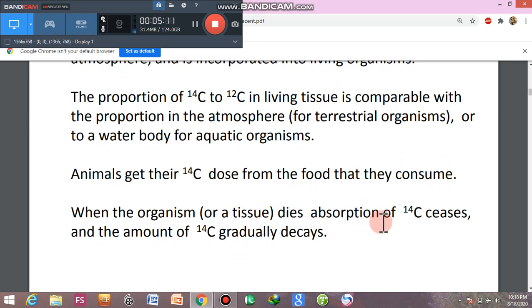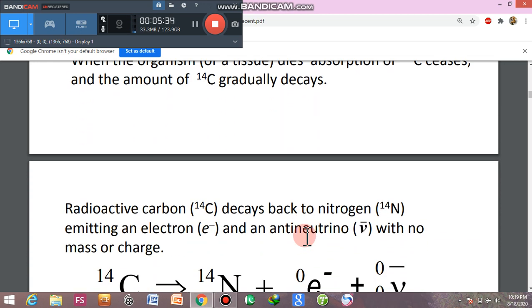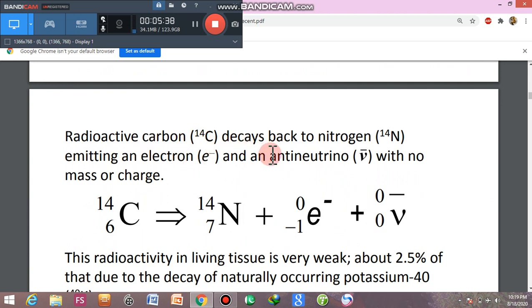When the organism or tissue dies, absorption of carbon-14 ceases and the amount of 14-C gradually decays. Carbon-14 already present in their body will start degrading. The radioactive carbon degrades to nitrogen, releasing an electron and an anti-neutrino.